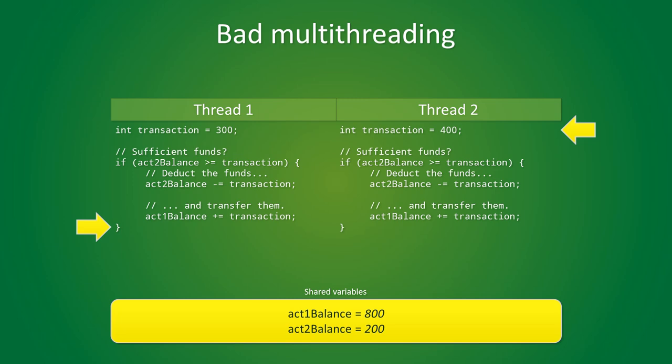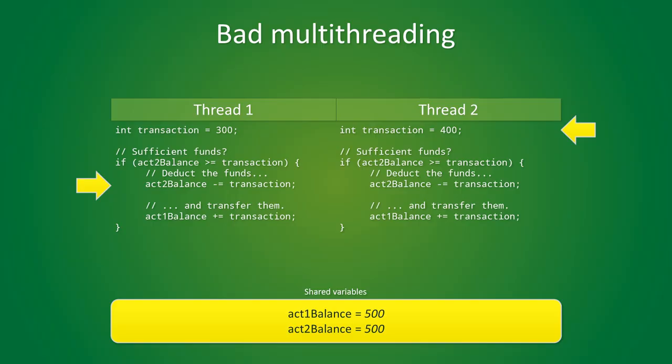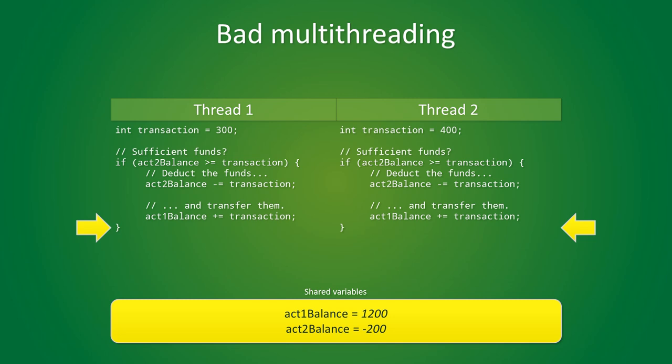Now what could go wrong if thread 2 is being executed simultaneously? Here's one recipe for disaster. On thread 1, we have reached the line that deducts the funds, but it has not yet been executed. Meanwhile, thread 2 is evaluating whether we have sufficient funds for transaction number 2. A quick look at our shared variables indicates that we have $500 left, which is fine. So it will proceed to execute that transaction, as does thread 1, and we end up with an account 2 balance of minus $200. Since account 2 only had $500 available, one of the two transactions should have bounced. Due to the order in which the statements were executed, both transactions were allowed to go through, which is not what should have happened.